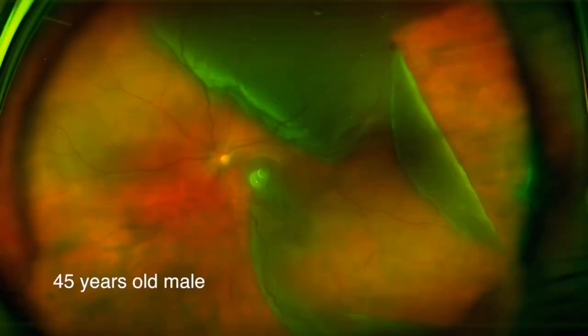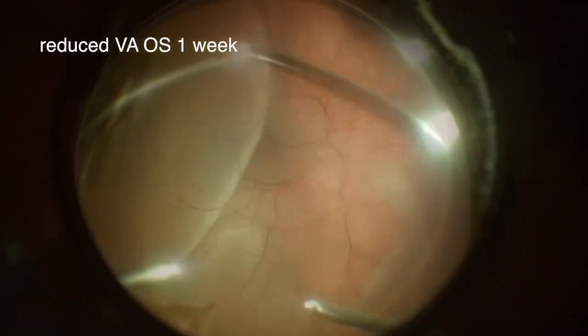In this video, we discuss the role of an encircling band with vitreoretinal surgery in cases of giant retinal tear. Some surgeons prefer placing an scleral buckle to support the vitreous base and reduce the risk of recurrent retinal detachment in cases of giant retinal tear.